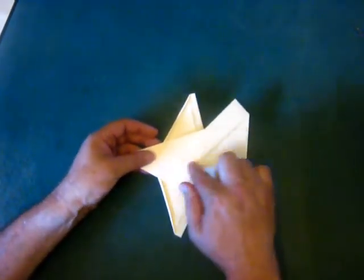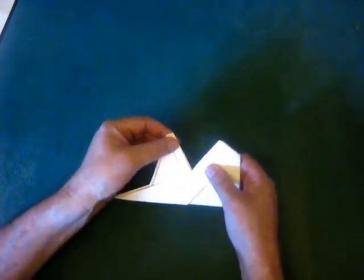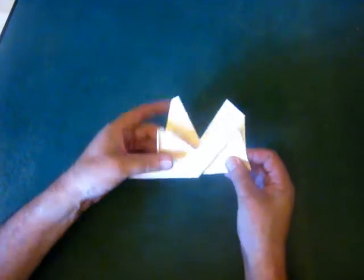We can check the symmetry by folding along that center line and checking where all the tips are. Tip to tip. And reasonably good.